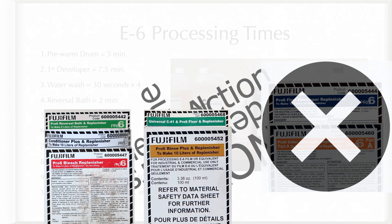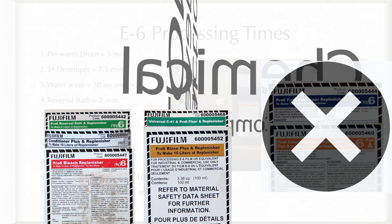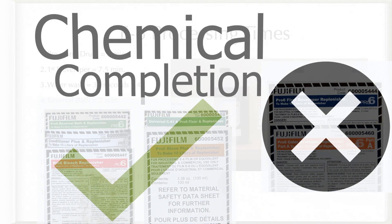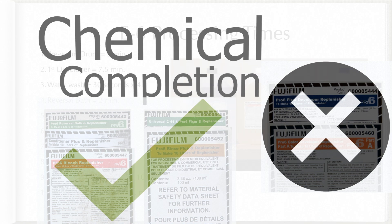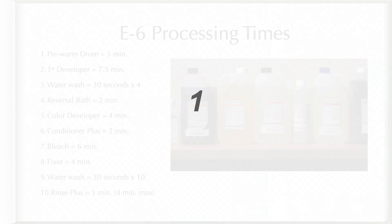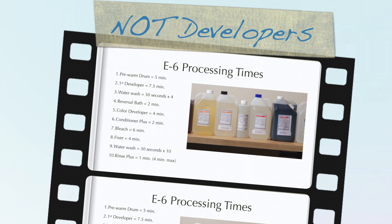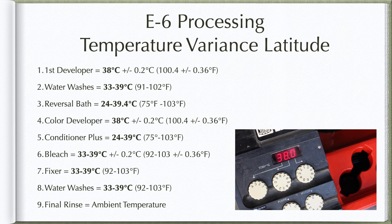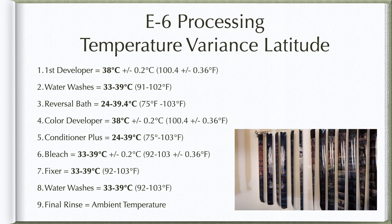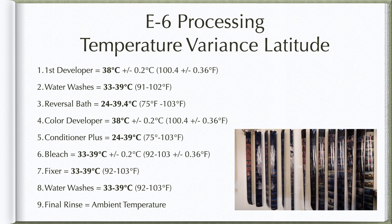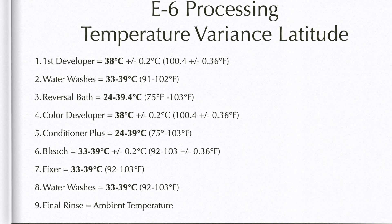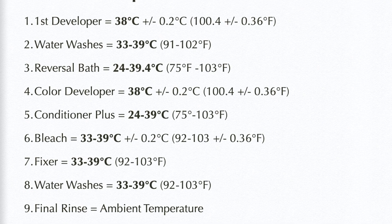An important tip regarding development times is that all of the steps, except for the first developer and color developer, won't be adversely affected if you go over in time because the action of the chemical goes to completion — the effect of that chemical will no longer result in further reaction with the film once complete. So if you go over in time by a few minutes, your film will be perfectly fine. Just remember, this tip does not apply to the first and color developers. The steps with the narrowest range of allowable temperature fluctuation are the first developer and color developer — these are critical steps for proper latent image development and should be tightly controlled. The remainder of the steps have generous latitudes, making it easier for developing without the Jobo processor.